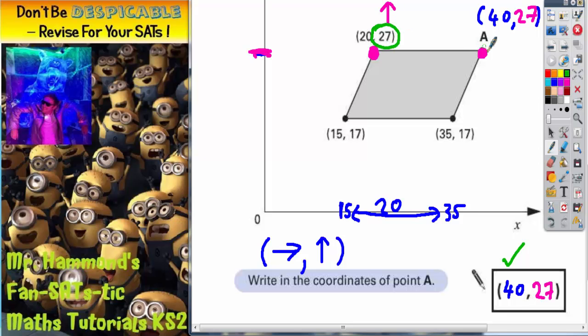And because point A is level, that is also 27 up. So the final answer is point A is 40 across and 27 up, which is (40, 27).